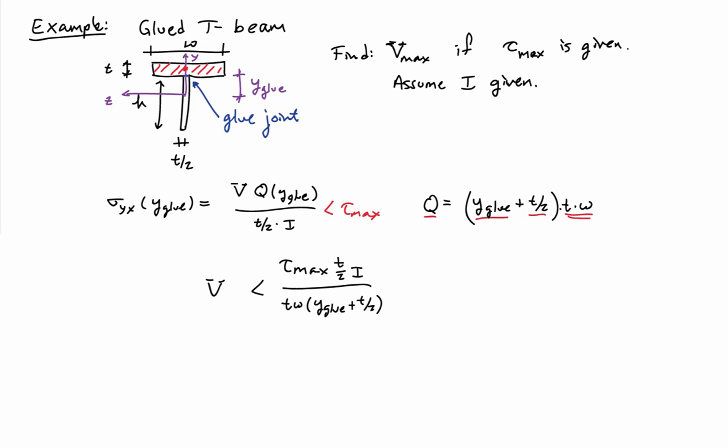So V max has to be less than or equal to tau max times t over 2 times I divided by tw times the quantity y-glue plus t over 2. And V max itself is the equality value in this relationship.